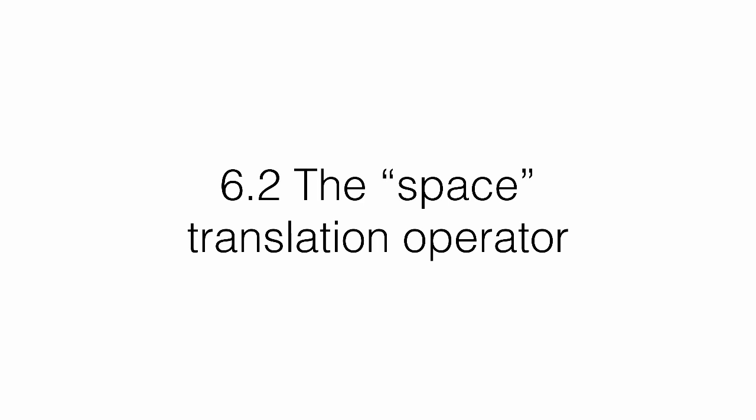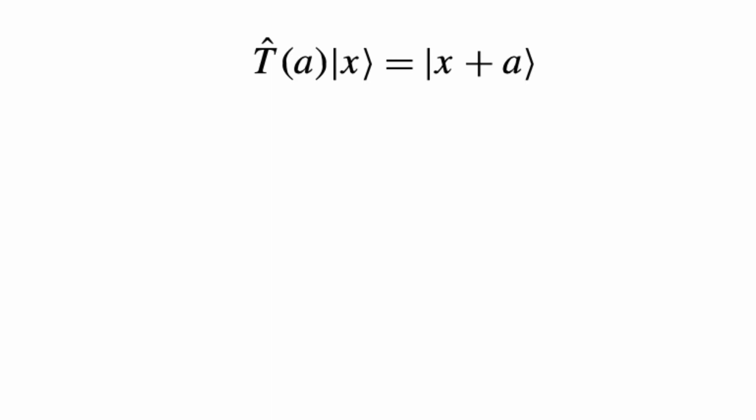Now that we have this framework and have defined the position operator, we can think about how to translate states in the quantum space. Let's introduce a new operator T̂. It's a definition: T̂(a) applied to a ket |x⟩ gives |x + a⟩. So we are translating the ket by plus a. Now suppose you take a general state psi — what is the effect of the translation T̂(a)?